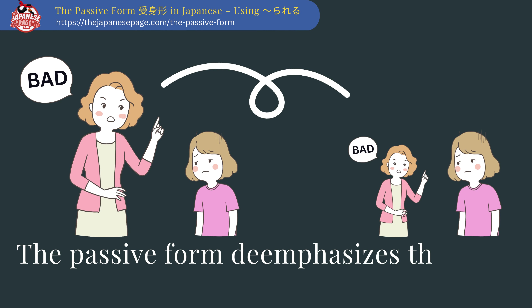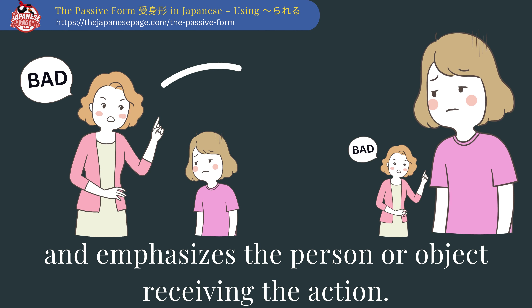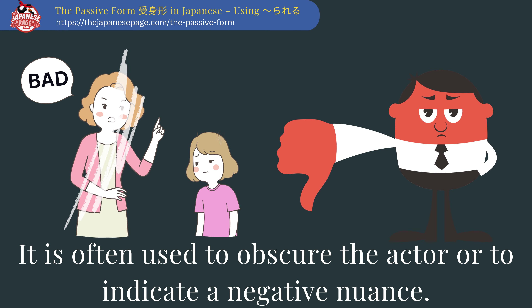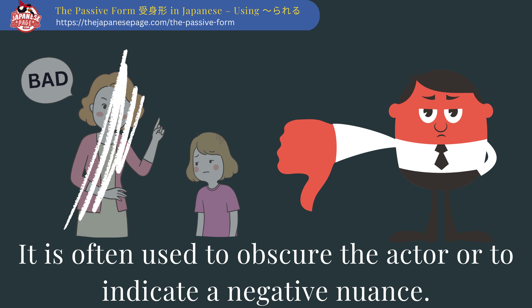The passive form de-emphasizes the actor and emphasizes the person or object receiving the action. It is often used to obscure the actor or to indicate a negative nuance.